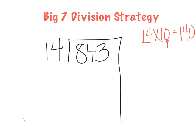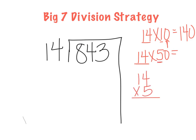Could I use 140? Absolutely, but is that a big enough chunk? Not really — I need to get to 843, so let's pull a bigger chunk. Let's try 14 times 50. I'll multiply the basic fact: 14 times 5. 5 times 4 is 20 — regroup, put 0 there and 2 in the tens. 5 times 1 is 5, plus 2 is 7. So that gives me 70, but I have to add a zero because I'm multiplying by a multiple of 10. So 14 times 50 is 700. Is that a big enough chunk? Yes, absolutely — let's stay there.